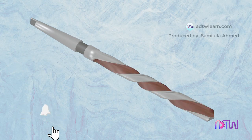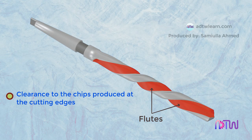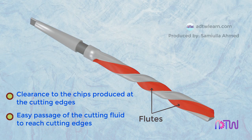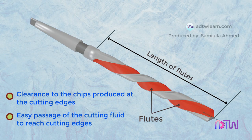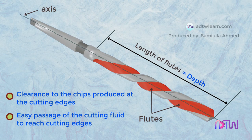Flutes: the helical grooves present on the body of the drill are called flutes. They provide clearance to the chips produced at the cutting edges, and also allow easy passage of the cutting fluid to reach the cutting edges. The length of the flutes is measured along the axis of the drill, from the drill point to the end point of the flute runout, and the length of the flutes determines the maximum depth that can be drilled.